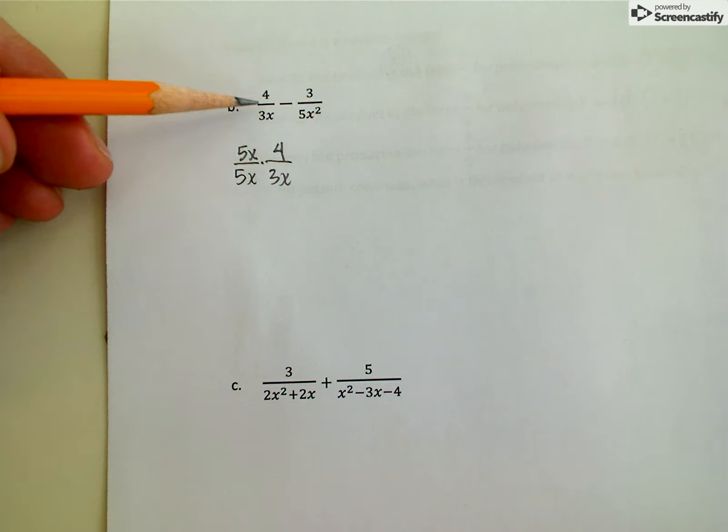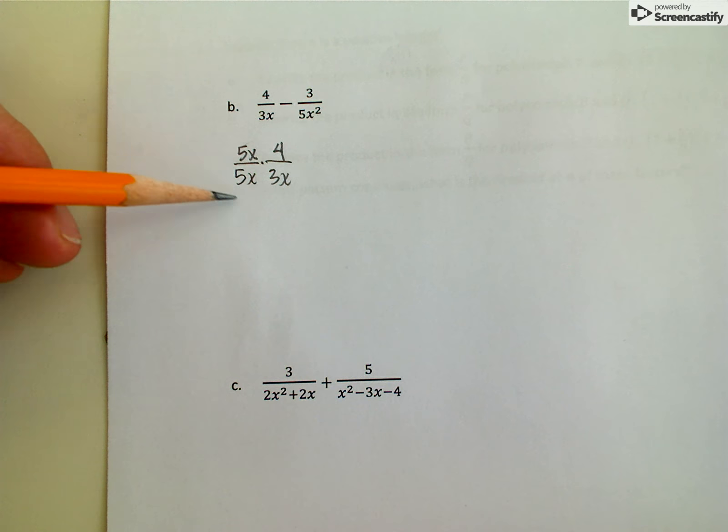So really what I'm doing is I'm multiplying this first rational expression by 1. 5x divided by 5x is just 1. And I can multiply anything, including a rational expression, by 1 without changing its value.